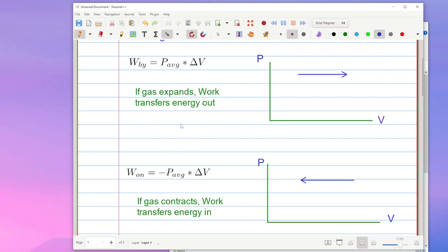Now if the gas expands, that means that what we've got going on over here is we have a Delta V that's a positive number. And so if we look at that as the gas expands, we're going to end up having a positive value for the work done by the gas.